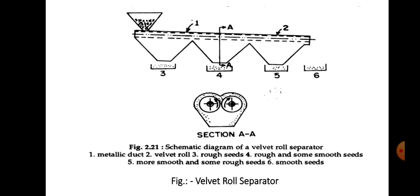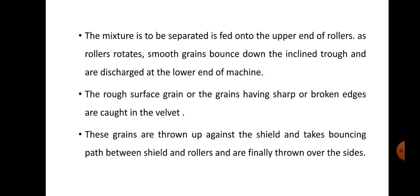The smooth seed collection point is at the lower end of the machine. Because of their roundness and soundness, the bouncing or jumping action of smooth grains is high, so they travel a greater distance and are collected at point number six. The rough surface grains or grains with sharp or broken edges are caught in the velvet and collected at the first collection point. These grains are thrown up against the shield, take a bouncing path between the shield and rollers, and are finally thrown over the sides.